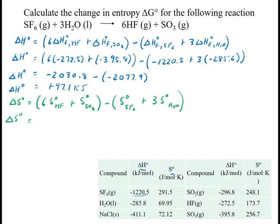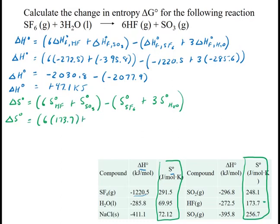My delta S° is going to be six times - now I'm going to this column on the table - so it's six times 173.7 right here plus the SO3 is 256.7 minus the SF6 is 291.5 plus three times 69.95 for the water.